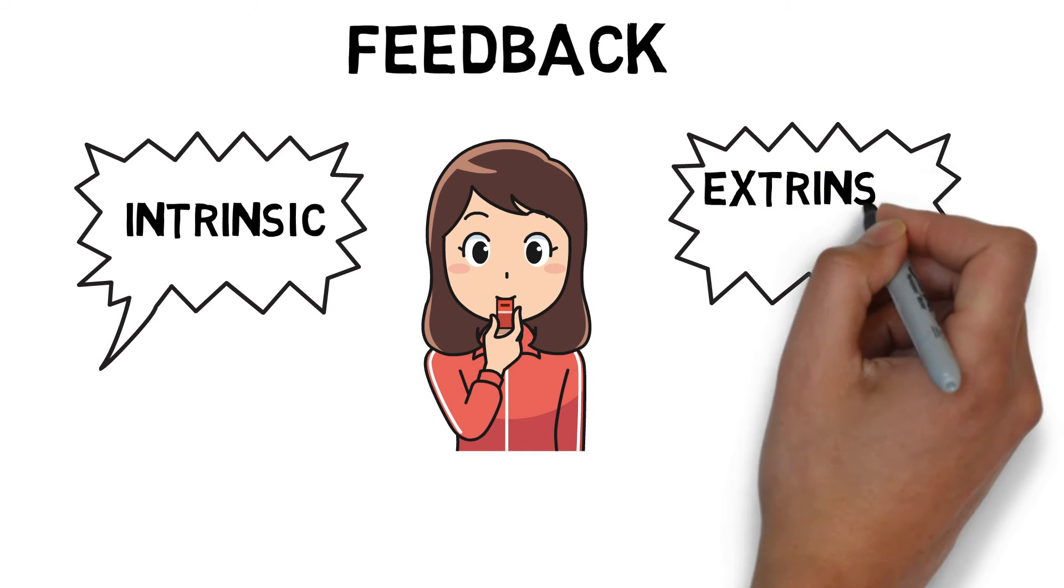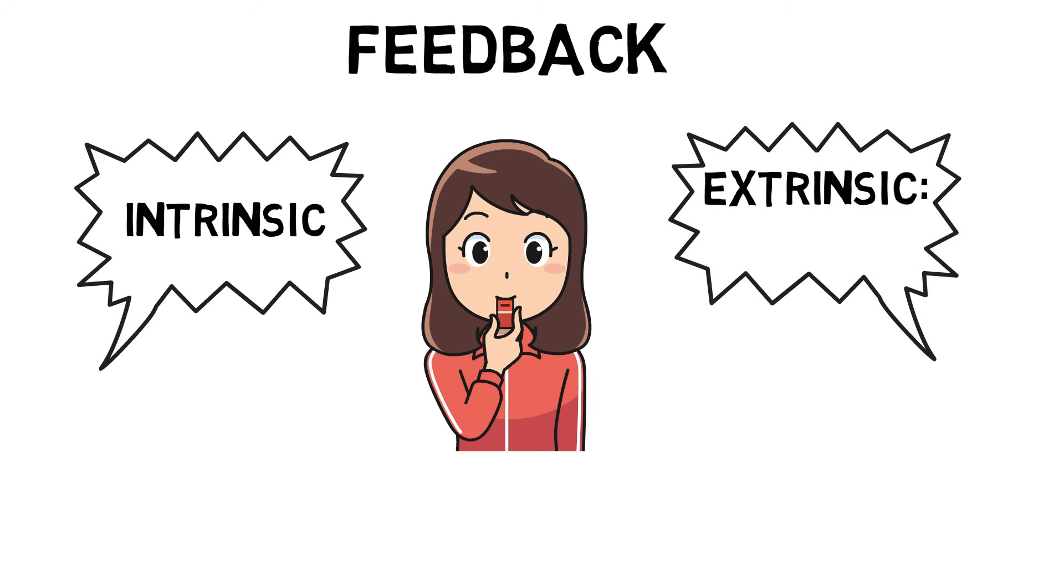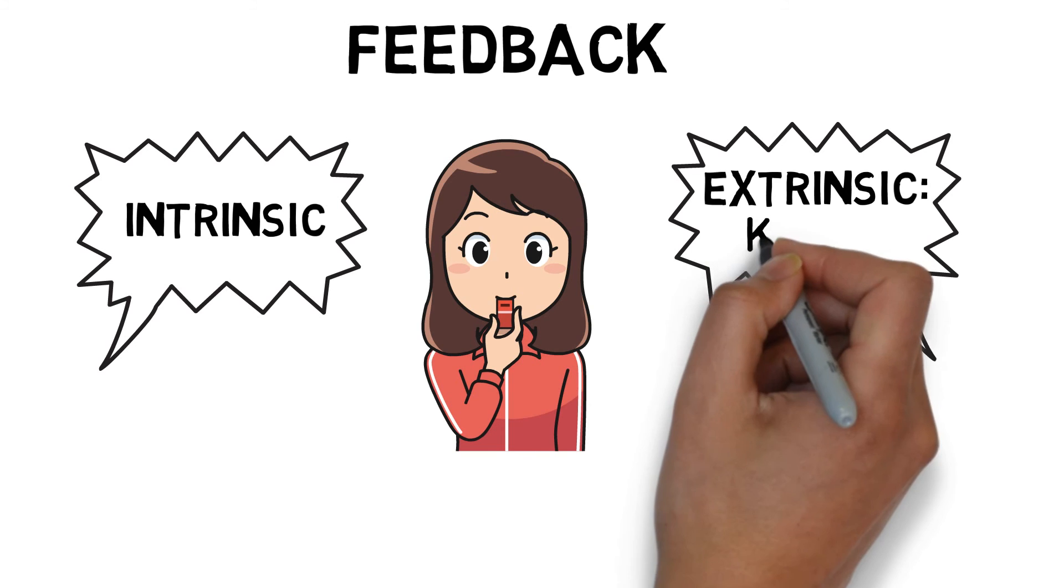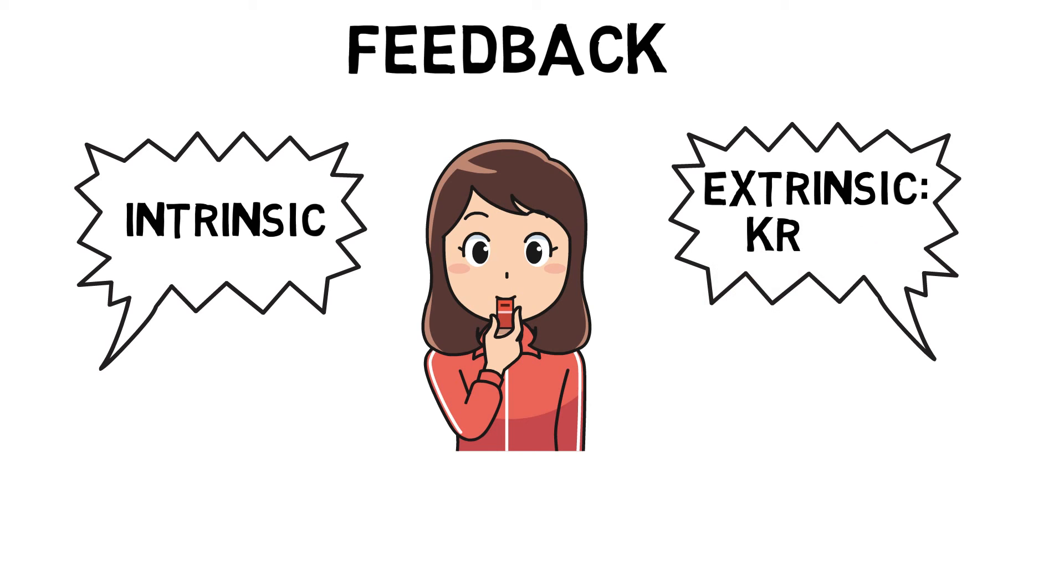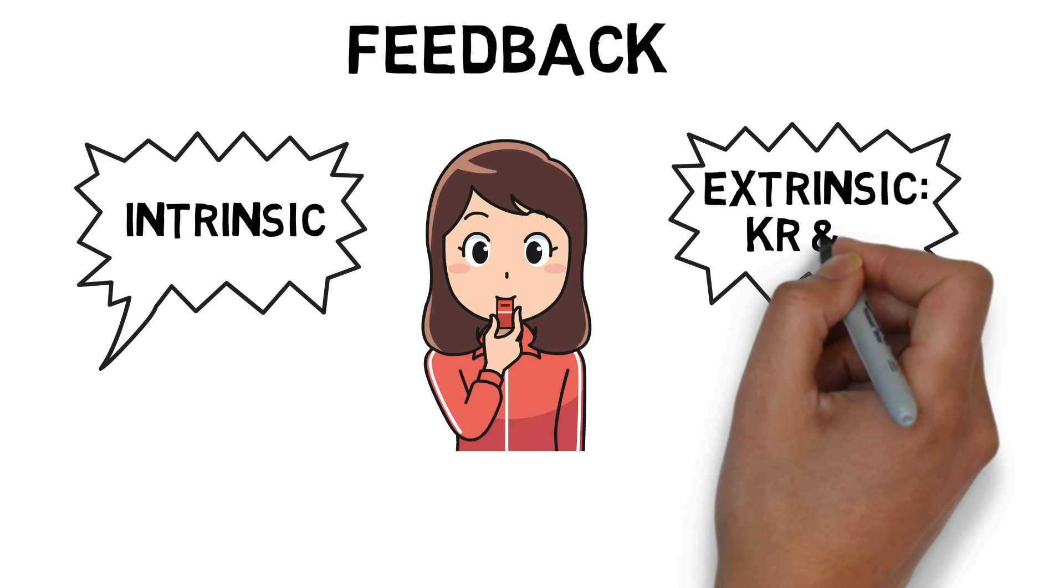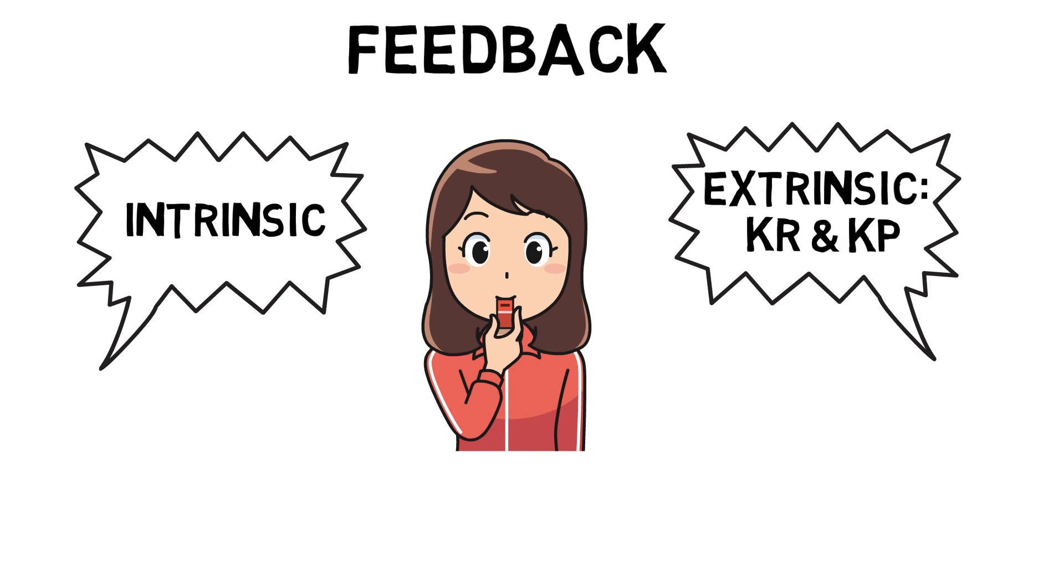Extrinsic feedback comes from a source other than the athlete, such as a coach. This can be broken down further into knowledge of results, which comes from feedback as a result of the consequences of a performance such as winning or losing, and knowledge of performance, which comes from feedback relating to the way a skill was performed, such as through video analysis.